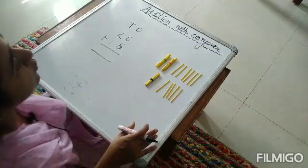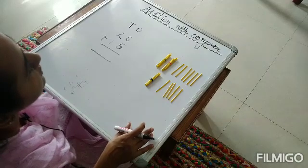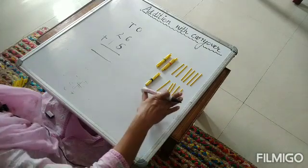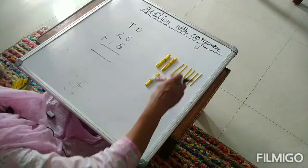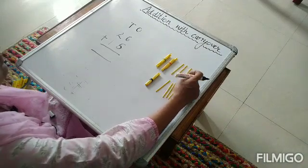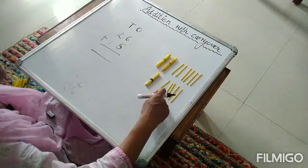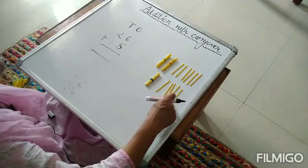So 26 sticks this side and 15 here. Now what we will do? We will count first the sticks which are loose ones. So we will start counting loose sticks: 1, 2, 3, 4, 5, 6, 7, 8, 9, 10, 11.